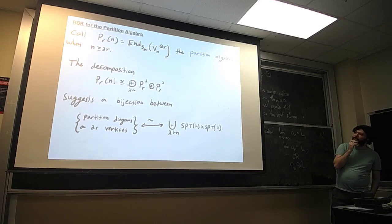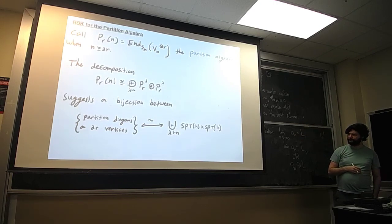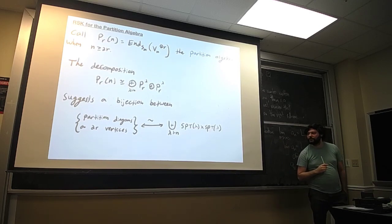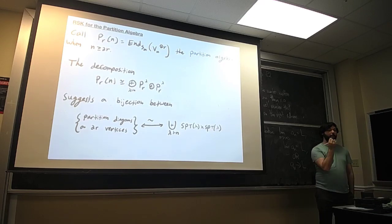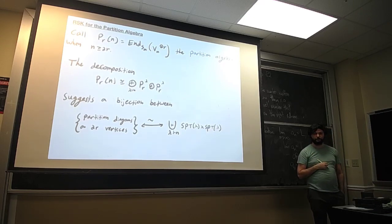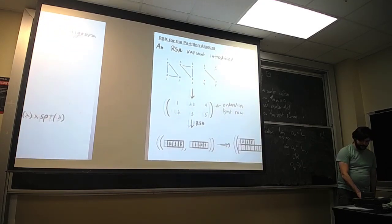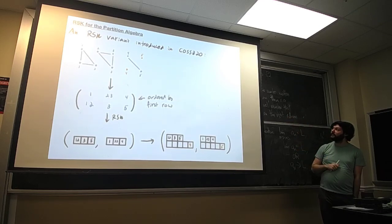We have an analogous decomposition of the partition algebra as a module over itself, giving a sum of pairs of irreducible representations. Just like before, this suggests there should be some bijection — this time between partition diagrams on 2r vertices and pairs of standard set partition tableaux of the same shape. This correspondence was worked out in a paper by Comanarejo, Orellana, Schilling, and Zabrocki in 2020.